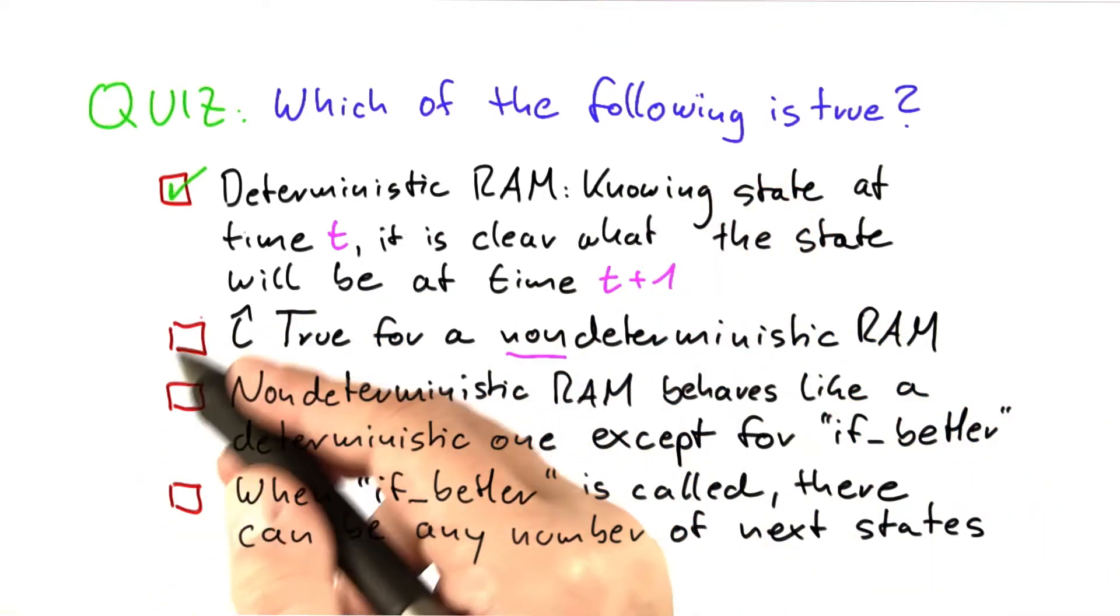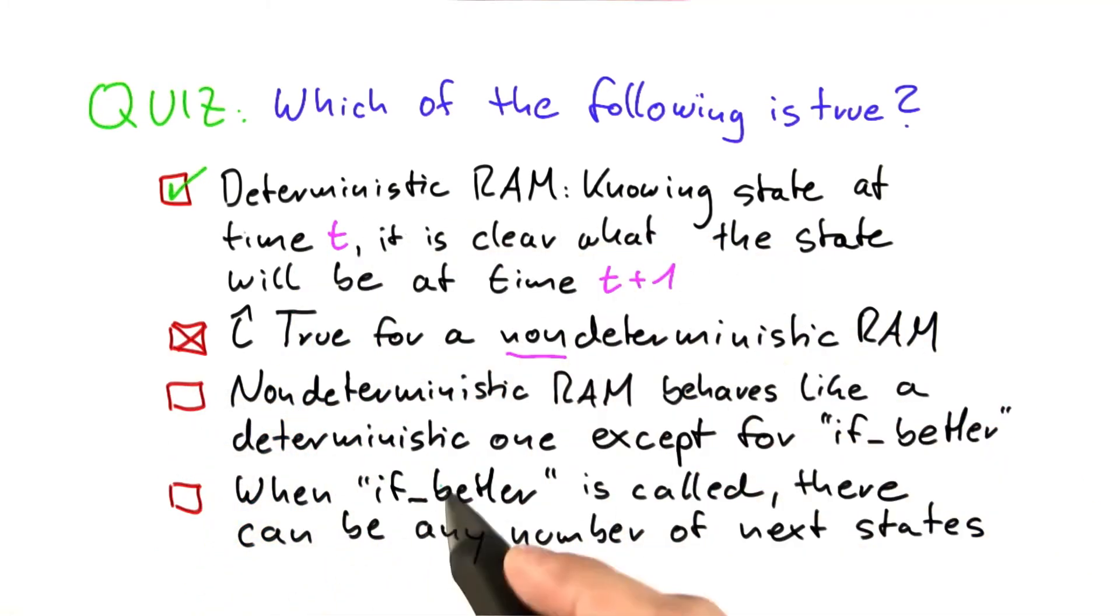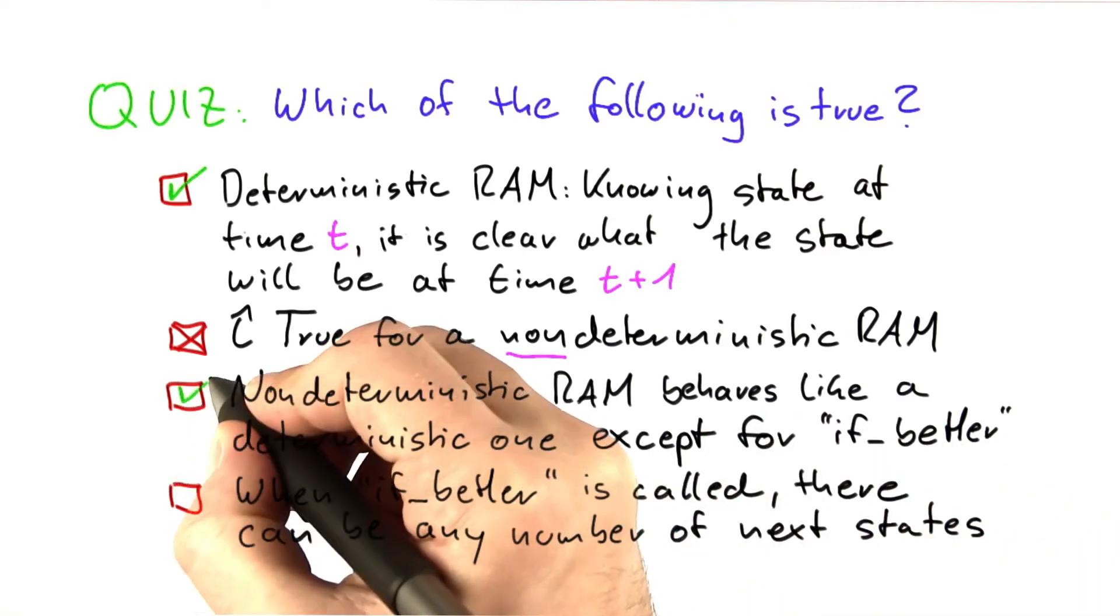And this gives us the answer for the last three statements here. So this one here is false because a non-deterministic RAM does not behave like a deterministic RAM. But there's actually only one case where it does this and that is when if better is called. So this statement here is true.